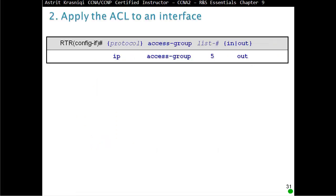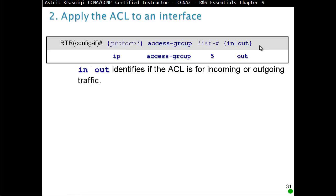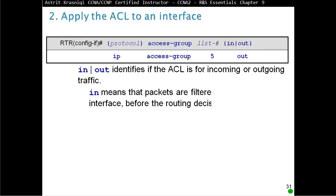Applying an ACL to an interface: we have to go apply it to the interface — access the interface, for example interface E0. Then define the protocol, for example 'ip', then access-group, so access-group 5 — that's access list number 5 — and then the direction in or out; out in this case. So 'in' or 'out' identifies if the ACL is for incoming or outgoing traffic.